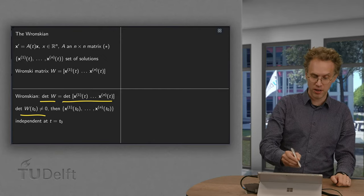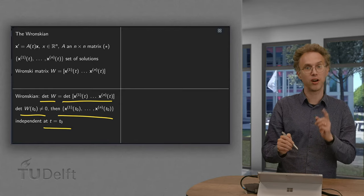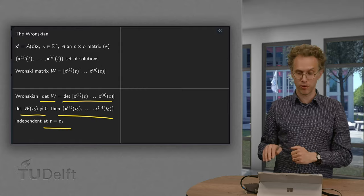then we know that the solutions x^(1) through x^(n) are independent at t equals t_0, so then they are independent on one time step.